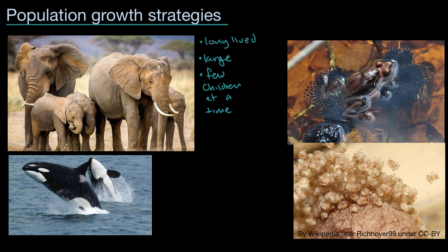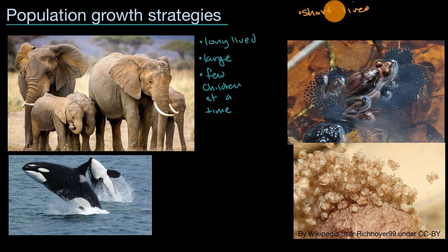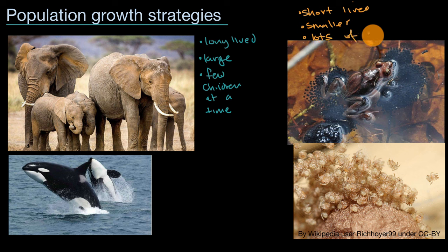Now at the other end of the spectrum, you have species like amphibians such as frogs, insects, small fish, bacteria, and mosquitoes that are more short-lived. They tend to be smaller, and they tend to have a lot of children at a time — lots of children at a time.